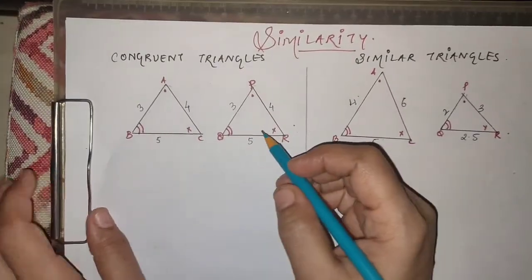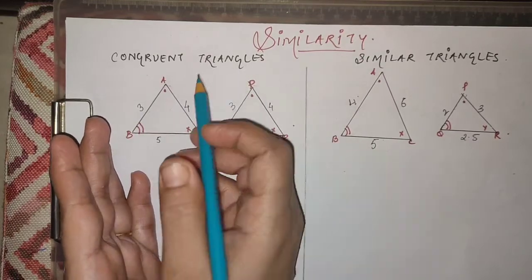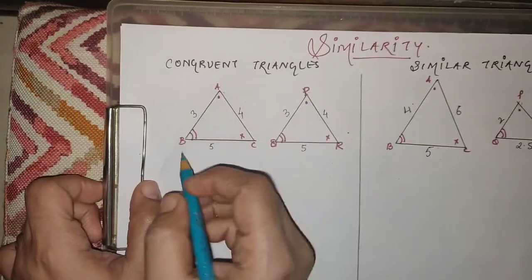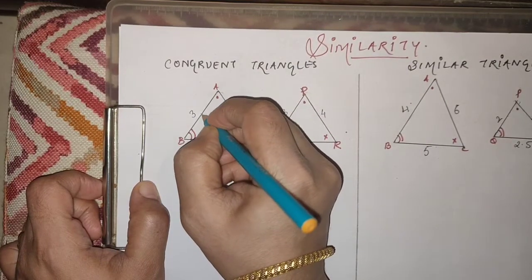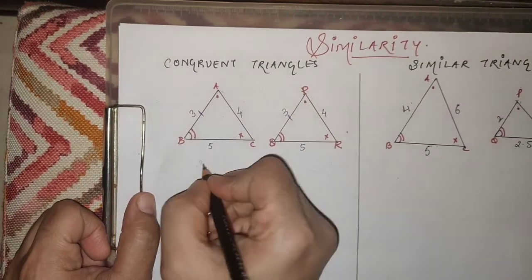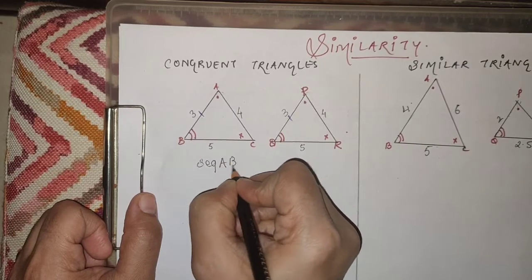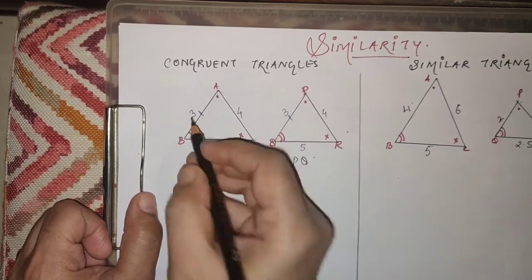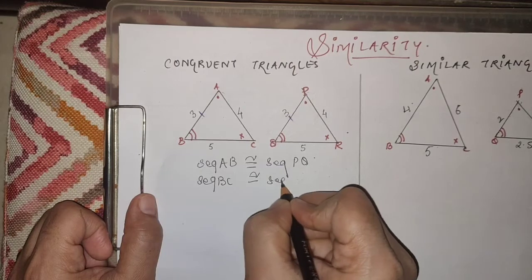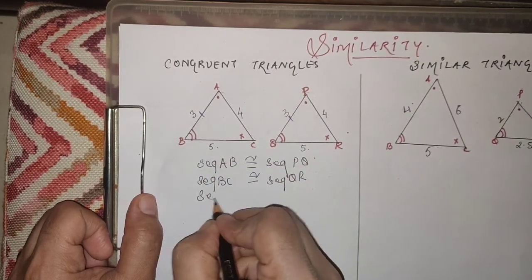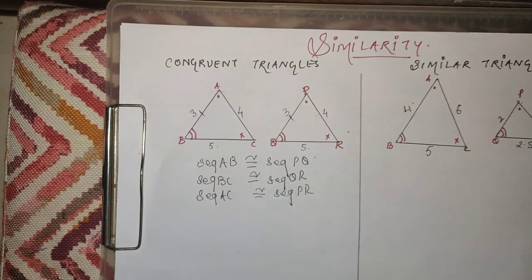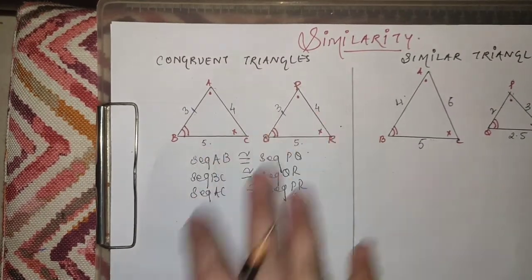Now before proceeding, first let me clear the difference between congruent triangles and similar triangles. In congruent triangles, corresponding sides are congruent. For example, segment AB is congruent to segment PQ - both have the same measurement. Segment BC is congruent to segment QR, and segment AC is congruent to segment PR - the measurement is exactly the same for corresponding sides.